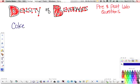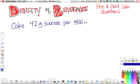And according to the label on Coke, there are 42 grams of sugar per serving, and that is per 355 milliliters, 12 ounces.